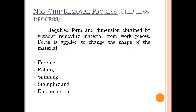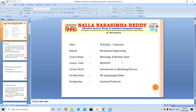In the non-chip removal process we are not separating or removing metal material from the workpiece. Examples for this include forging, rolling, spinning, stamping, and embossing. This is the introduction to the machining process. In the next class onwards we will discuss the different types of machine tools we are using and their specifications. Thank you.